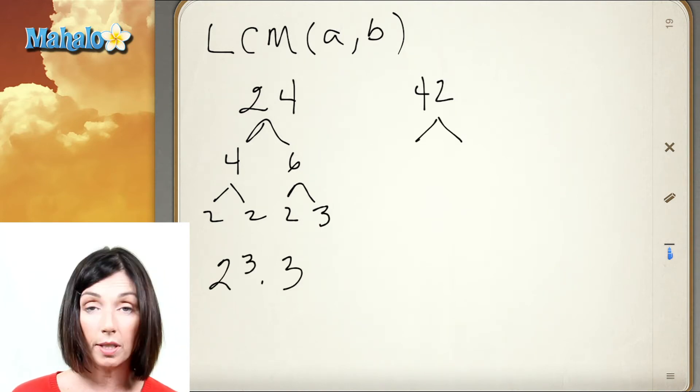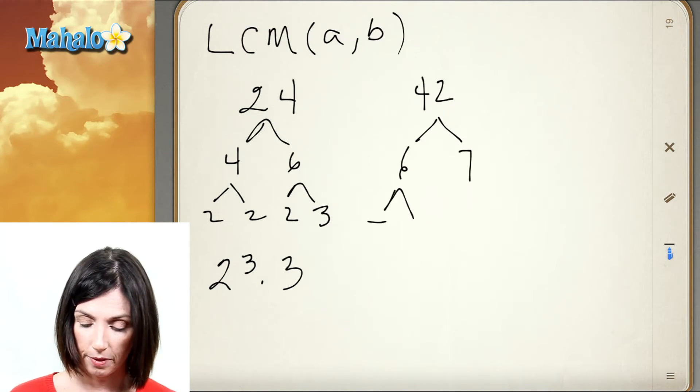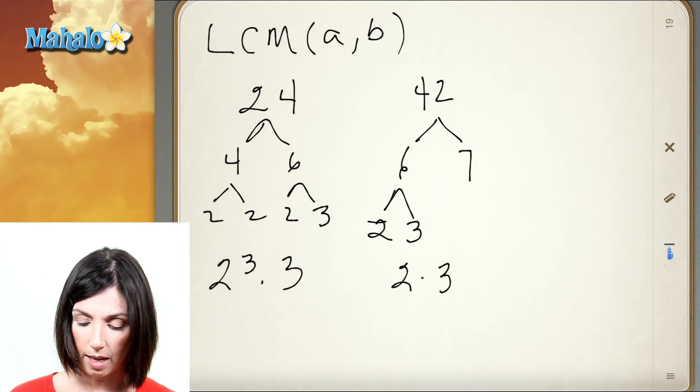42 factors into 6 times 7, 6 factors into 2 times 3, and so we have 2 times 3 times 7.